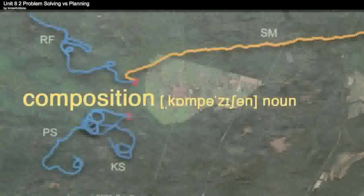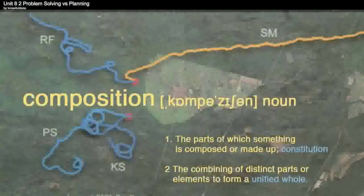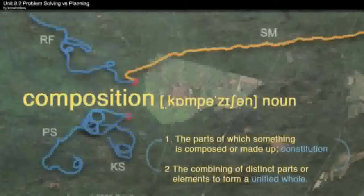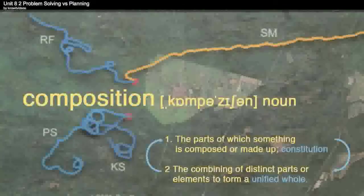Planning without actually having feedback from the environment is useless. You'll move in circles, and in fact spontaneity comes from that feedback. There's a difference in emphasis and tone between planning and composition, and it can be found in the definition of the word composition itself. For our purposes there are two definitions that are important: composition can mean the actual constituting parts, or it can mean how you combine those parts to create a unified whole.